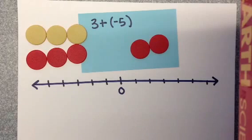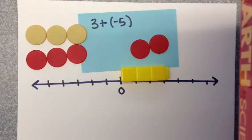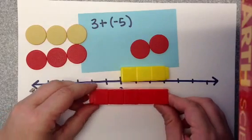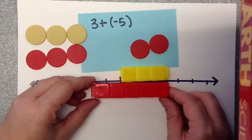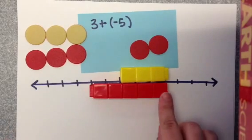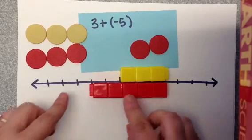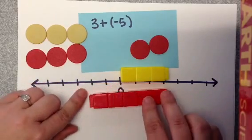You can do that on the number line as well. We'll start off with 3 Unifix blocks, and we're going to add 5 negative blocks to that. So when we add our 5 negative blocks, we're going to start where the 3 is and add our 5 negatives. Negatives go towards the other way. They go towards the left. So we'll have 1, 2, 3, 4, 5 negative blocks. And that ends us up on the number line at a negative 2.